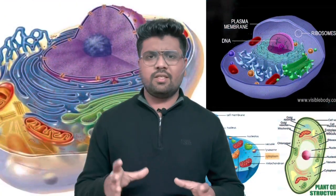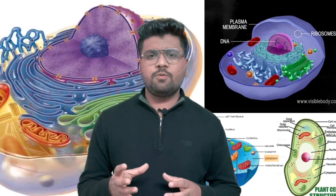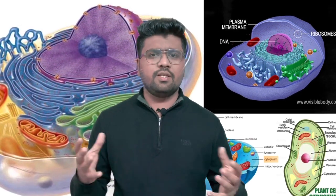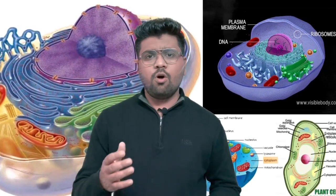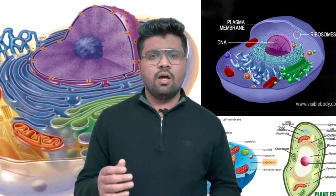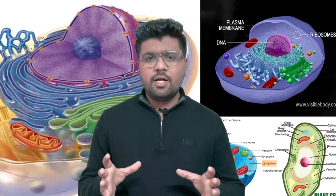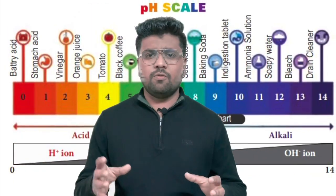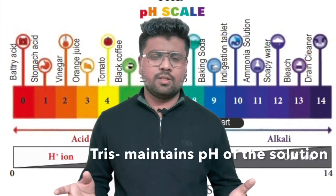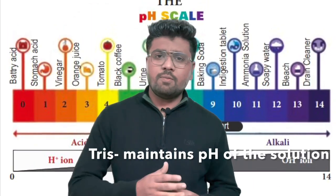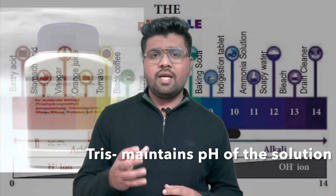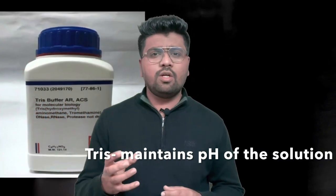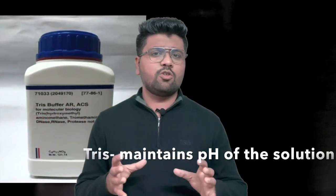Next is TRIS. When the cell wall and membranes are broken during tissue grinding, compartmentalization ends and the cytoplasmic material is released. Because of this, the pH gets altered and the stability of biomolecules is disturbed. And here comes TRIS, which plays a major role in maintaining the pH of the solution.